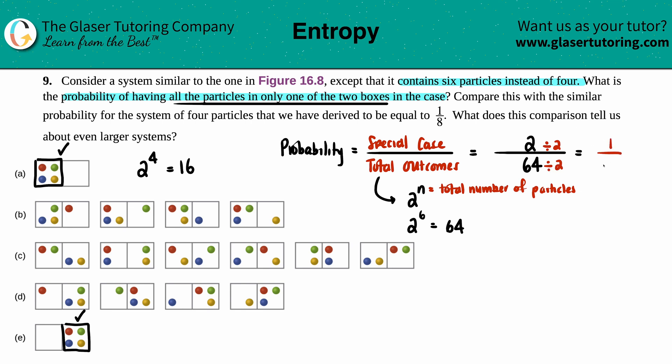So this would be 2 divided by 64. If we actually simplified this, 64—I could divide both numbers by two. Divided by two, divided by two, this would technically be 1 over 32. And that's the answer to the first part. What's the probability? You have a 1 in 32 shot that all the particles will be in only one out of the two boxes.